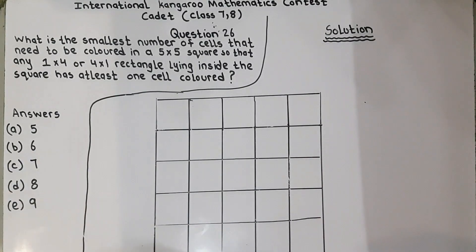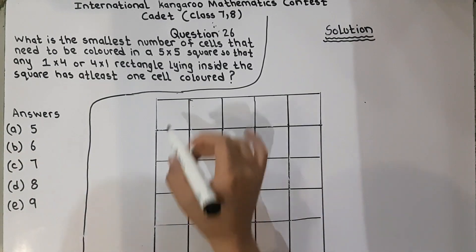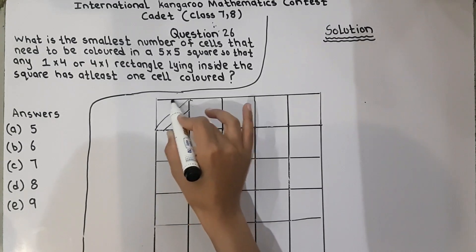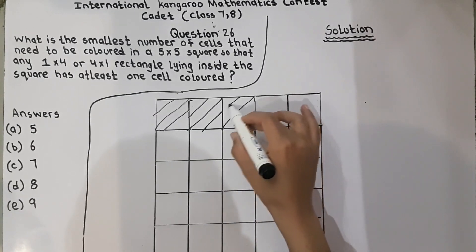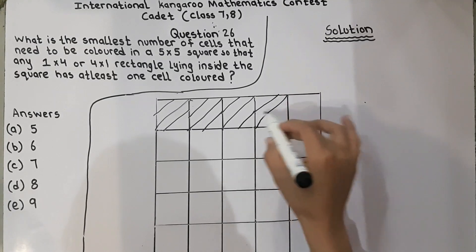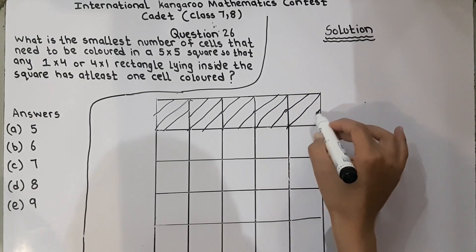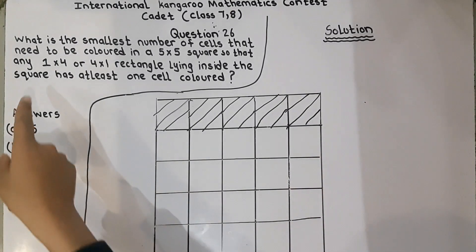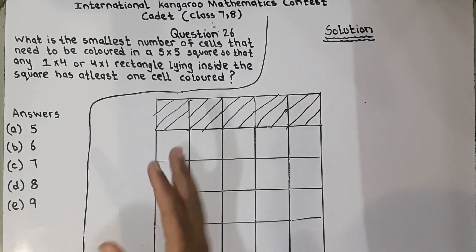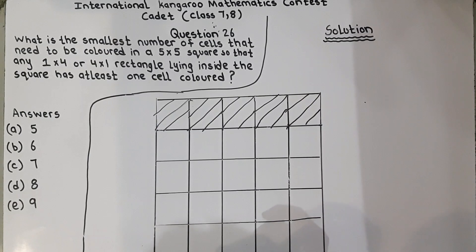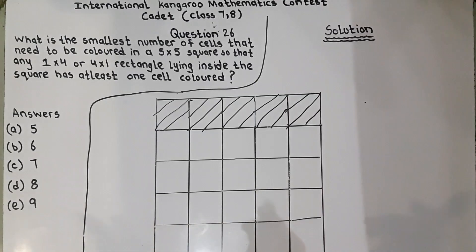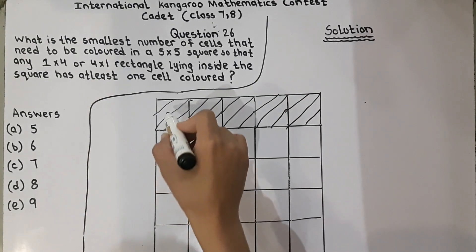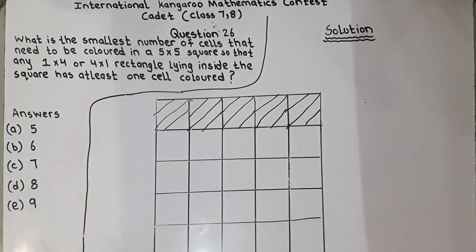First we will check 5 — we will shade 5 boxes. Now we will check whether a 1x4 or 4x1 rectangle lying inside these has at least 1 cell colored. A 1x4 means like this — it has all cells colored, but a 4x1 means this — it has 1 cell colored. However, a certain 1x4 doesn't have any cell colored, so 5 is not enough.